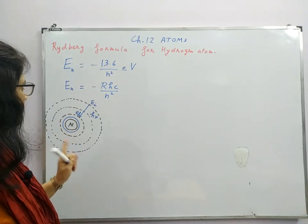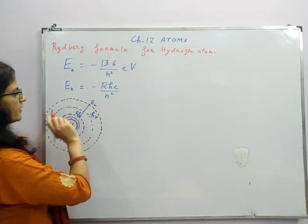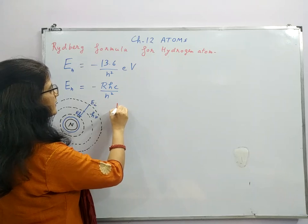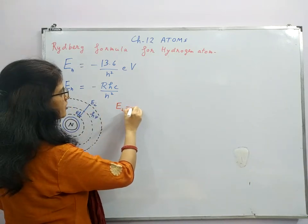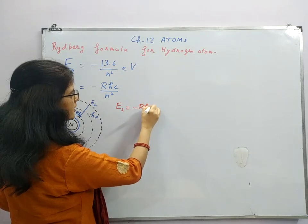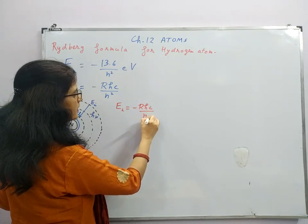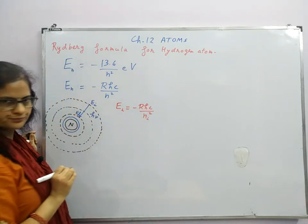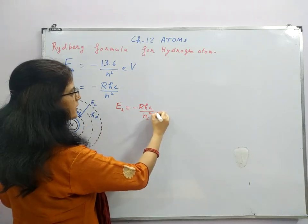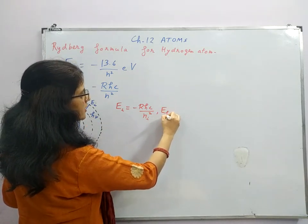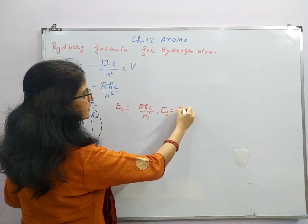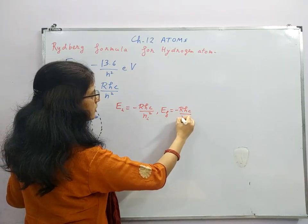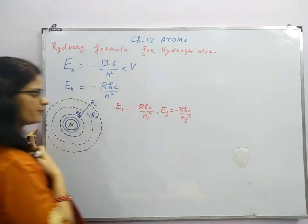So for this transition, if we write the formula, the initial energy in the higher energy state is minus R_h c upon n_i whole square. Similarly, energy in the final energy level will be minus R_h c upon n_f whole square.